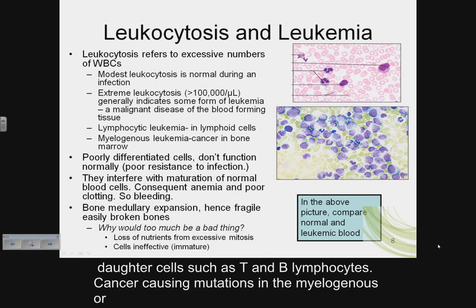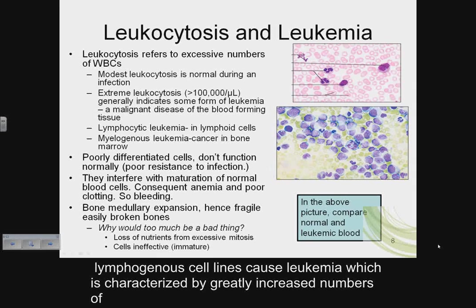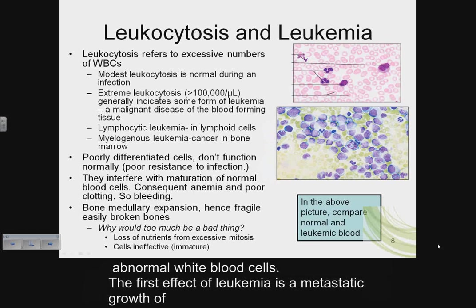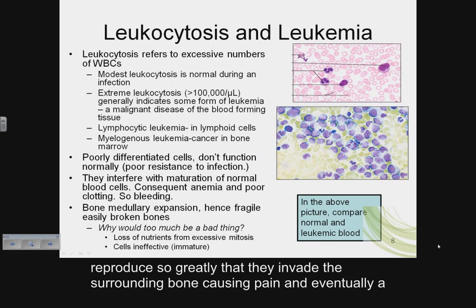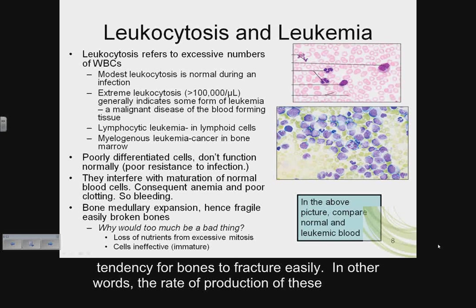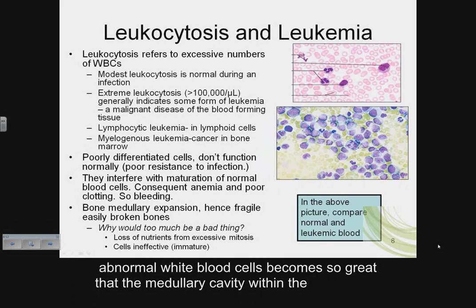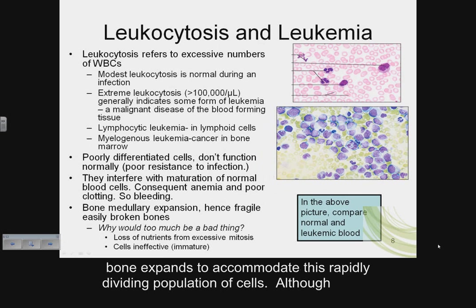Or lymphogenous daughter cells such as T and B lymphocytes. Cancer-causing mutations in the myelogenous or lymphogenous cell lines cause leukemia, characterized by a greatly increased number of abnormal white blood cells. The first effect of leukemia is metastatic growth of leukemic cells in abnormal areas. Leukemic cells from the bone marrow may reproduce so greatly that they invade the surrounding bone, causing pain and eventually a tendency for bones to fracture easily.